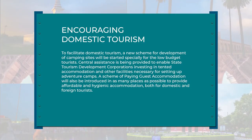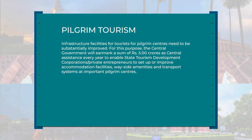Encouraging domestic tourism was considered in the National Action Plan. A new scheme for development of camping sites would be started specially for low budget tourists. Central assistance is being provided to enable state tourism development corporations to invest in tented accommodation and other facilities necessary for setting up adventure camps. A scheme of paying guest accommodation would also be introduced at many places. Pilgrim tourism infrastructure facilities for tourists at pilgrim centers need to be substantially improved.